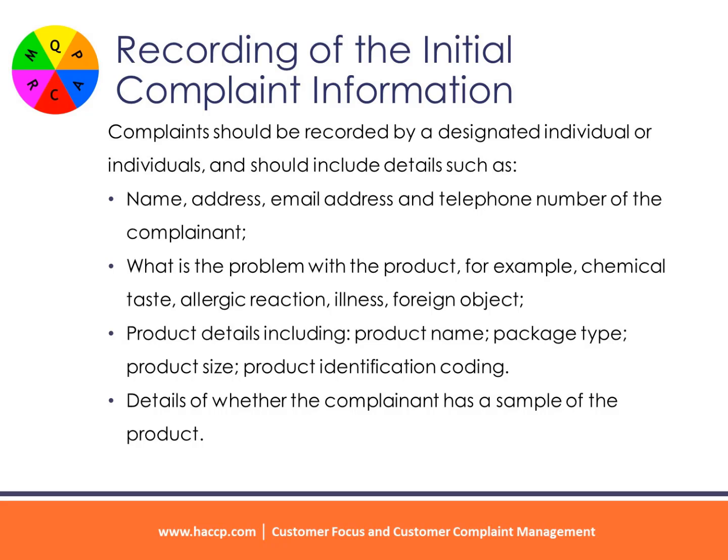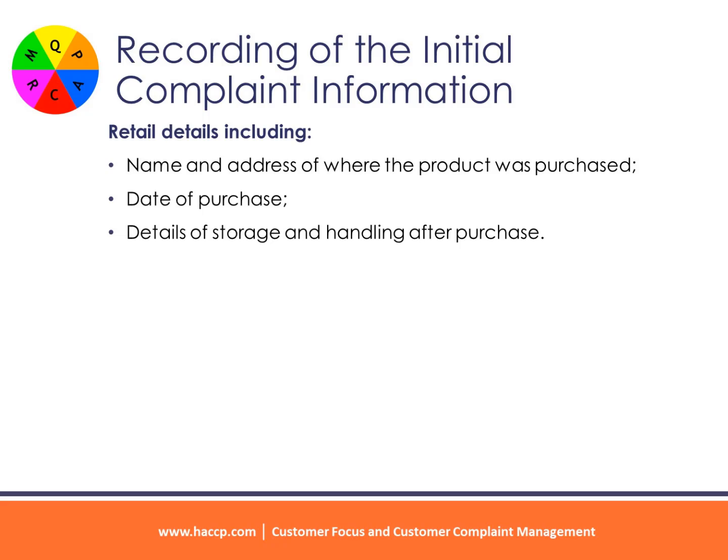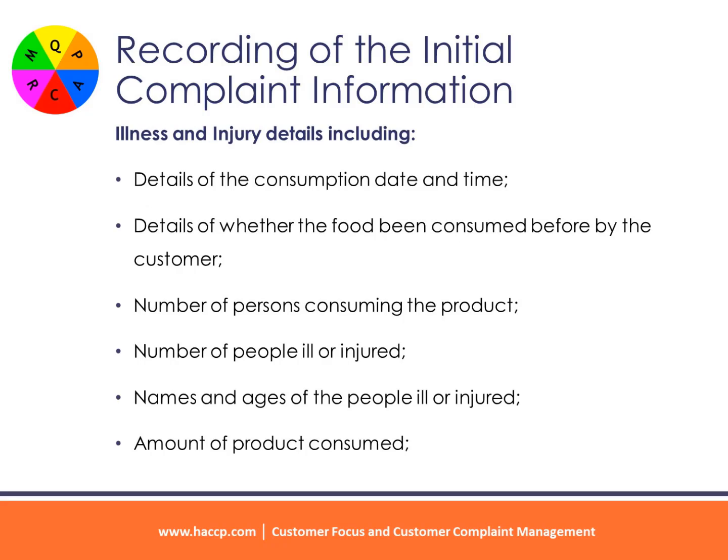Complaints should be recorded by a designated individual and should include details such as: name, address, email address, and telephone number of the complainant; description of the problem with the product, for example chemical taste, allergic reaction, illness, or foreign object; product details including product name, package type, product size, and product identification coding; details of whether the complainant has a sample of the product; retail details including name, address, and date of purchase; details of storage and handling after purchase; and illness and injury details including consumption date and time, whether the food had been consumed before, number of persons consuming the product, number of people ill or injured, names and ages of those ill or injured, and amount of product consumed.